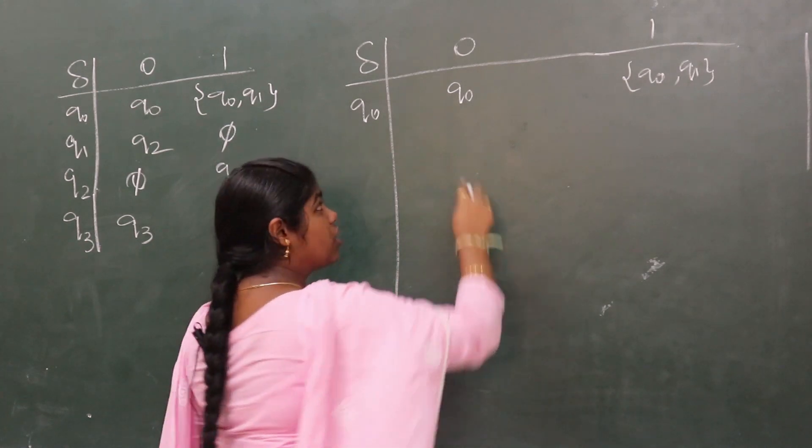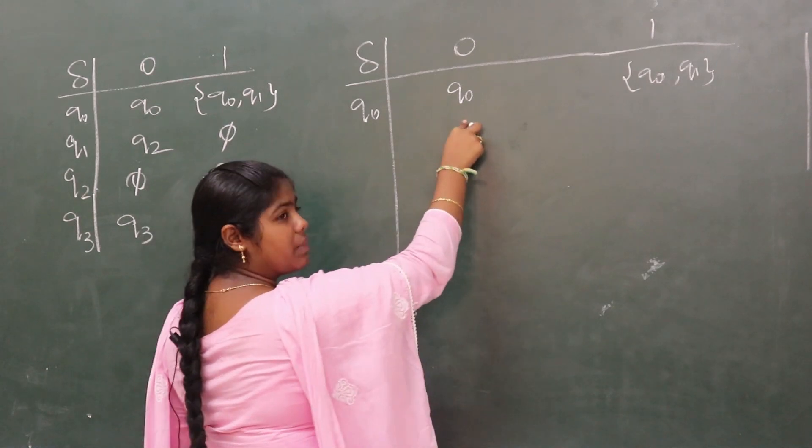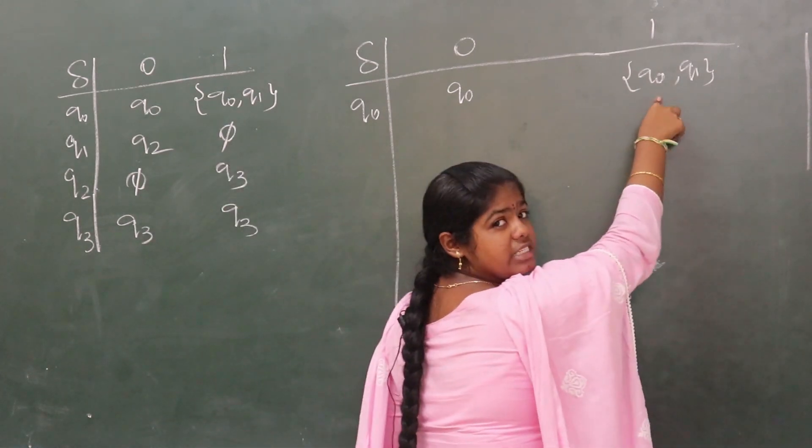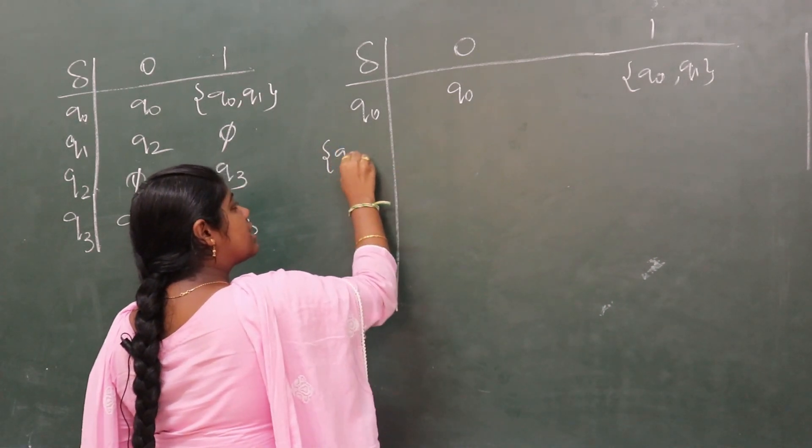Now what we need to do is check if q0, q1 is a new set of states. q0 is already there, but the state q0, q1 is a new state. We haven't written that state yet, so we need to go for the next state.